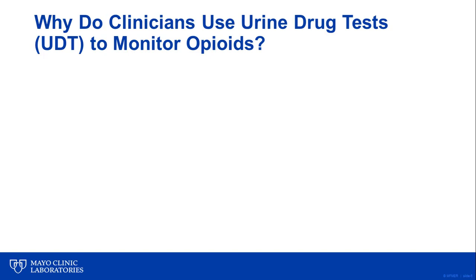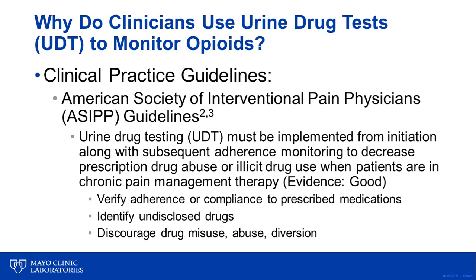Why do physicians use urine drug tests to monitor pain management patients? Currently, there are numerous clinical practice guidelines published that support the use of laboratory tests to monitor compliance in pain patients. For example, the American Society of Interventional Pain Physicians have a guideline stating that urine drug testing must be implemented from initiation, along with subsequent adherence monitoring, to decrease prescription drug abuse or illicit drug use when patients are in chronic pain management therapy. The purpose of urine drug testing is to verify adherence to prescribed medications, identify undisclosed drugs, and discourage drug misuse, abuse, and diversion. The actual use of urine drug tests as part of adherence monitoring has been associated with a 49% reduction in opioid abuse, according to a publication by Mangicanti.